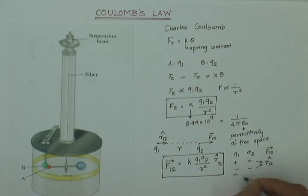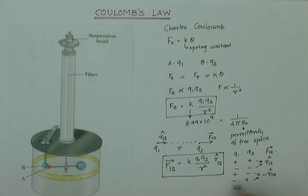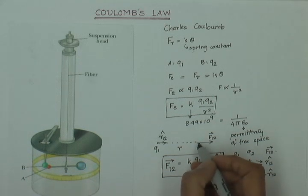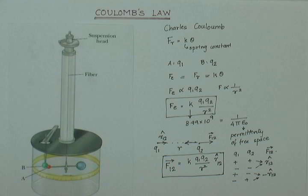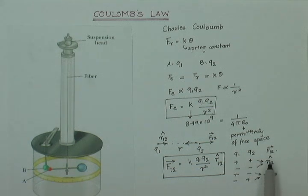Now, if one of this is positive and the other is negative either plus minus or minus plus, then what happens is that this product is negative and so F12 will be in the direction of minus R12 hat. And so, F12 will be in the opposite direction of R12 hat which means that this is an attractive force. And that also matches with what we know that like charges repel and unlike charges have an attracting force between them.